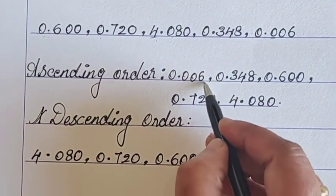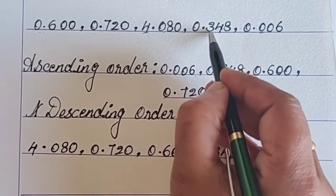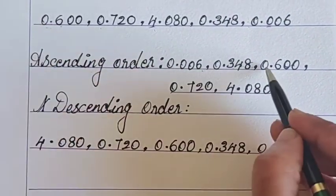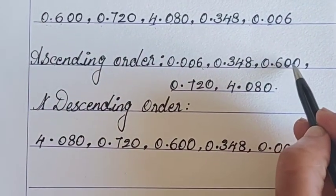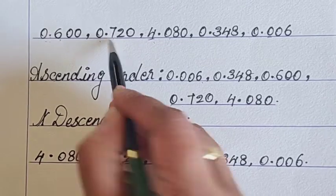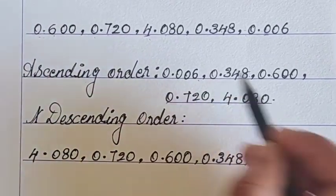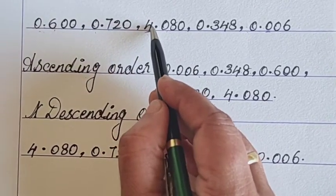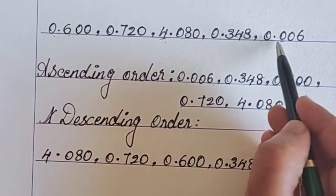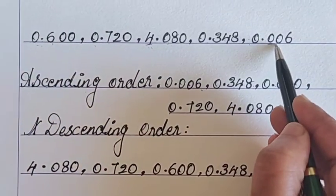0.006, we will write first. Then go to the next smallest. 0.3, 0.348. Next, 0.6, 0.600. 0.006, 0.348, 0.720. And the last biggest one, 4.080. Why this is biggest? Because there is a whole number. And the rest of the numbers not having whole numbers. Here there are zeros. So this is the biggest number and this one is the smallest number.